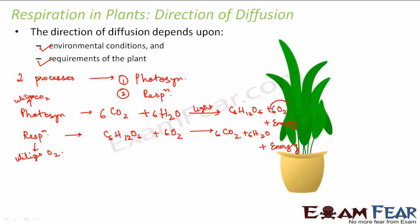Similarly, the product of respiration — carbon dioxide — is utilized by photosynthesis. So whatever is released is not getting wasted; it is used up for the other process.